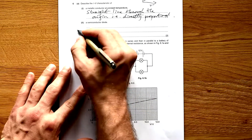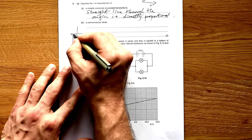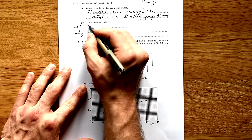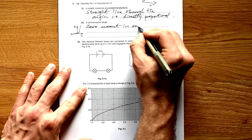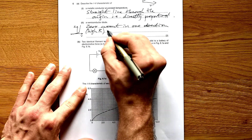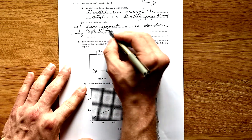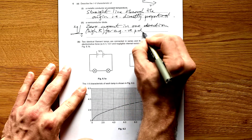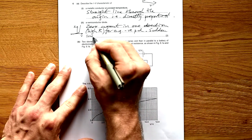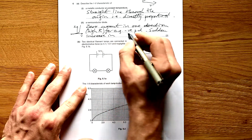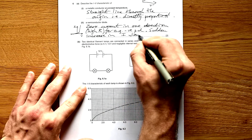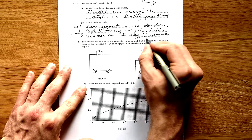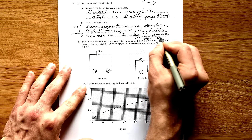For a semiconductor diode, the characteristic looks like: zero current in one direction with high resistance — for example, for negative PD — then a sudden increase in current when voltage increases just above zero volts.